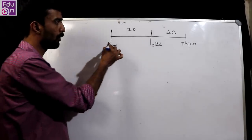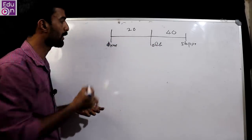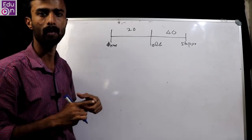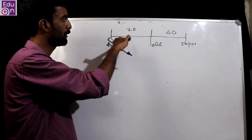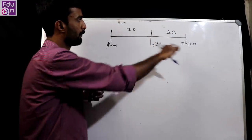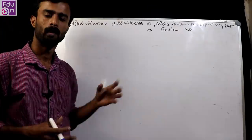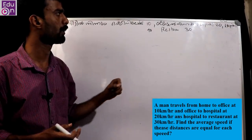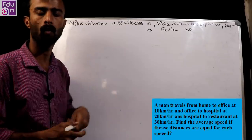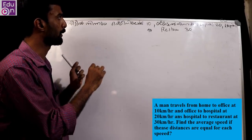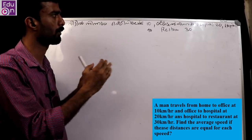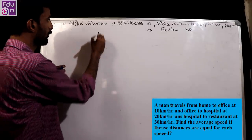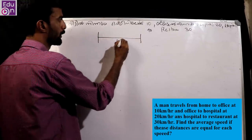I will tell you how to do this method. When the distance is equal, we apply this formula. The speeds given are in the range — for instance, 10 km per hour in between segments. The distance is equal, so we use this approach.